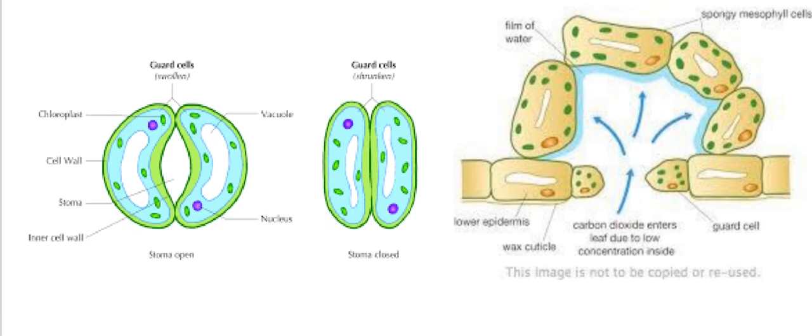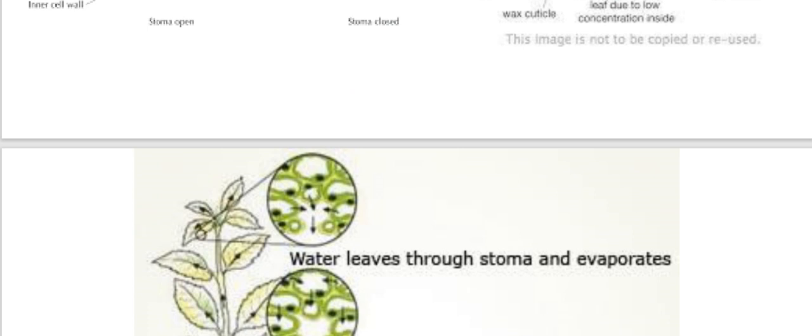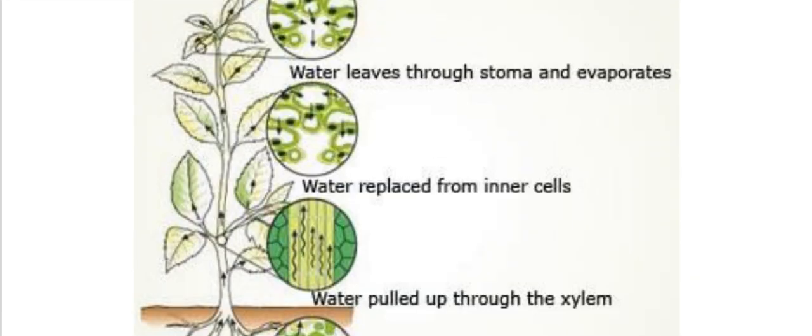The first example is transportation of atmospheric air through the stomata of the cells of the leaves. Here you can see stomata in the first figure. The second example shows how carbon dioxide enters the leaf due to transportation.